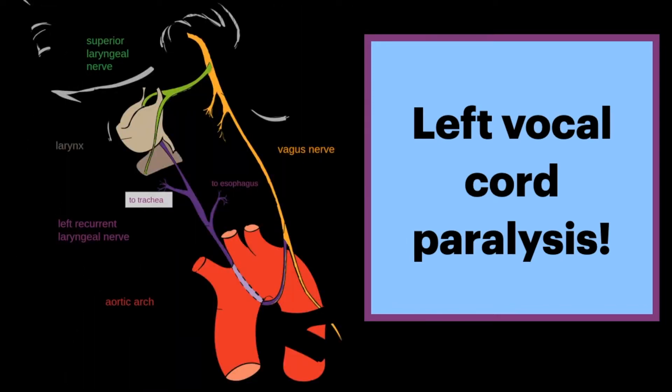It's important to remember that causative lesions anywhere from the medulla — the origin of the vagus nerve, the 10th cranial nerve — to the recurrent laryngeal nerve may cause left vocal cord paralysis.